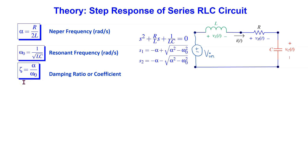The damping coefficient, zeta, is defined as the ratio of the Neper and the resonant frequencies. For the series RLC circuit, it is well known that the characteristic equation takes the form shown here. This is a quadratic equation and its roots can be expressed in terms of the Neper and resonant frequencies as shown.